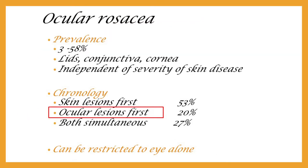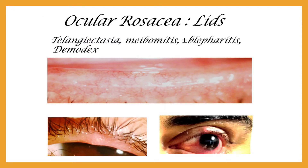Ocular changes are seen in many patients of rosacea. It primarily affects the lid margin, which further leads to conjunctivitis and keratitis. Rarely, episcleritis is also observed. Ocular disease severity is not dependent upon skin disease. In fact, in some cases, it may be limited to the eye only.